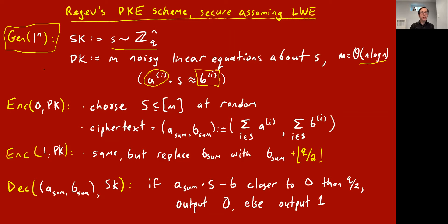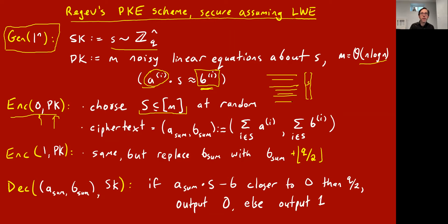The task is about encryption and guessing messages. Let's say Alice comes along and wants to send a message to Bob. She looks at Bob's public key — the a's and the error-filled b's. To encrypt the bit zero, she chooses a random subset of the a vectors. She adds up the a vectors and the b answers for this random subset, and that's the ciphertext: the sum of the a's and the sum of the b's, all mod q.